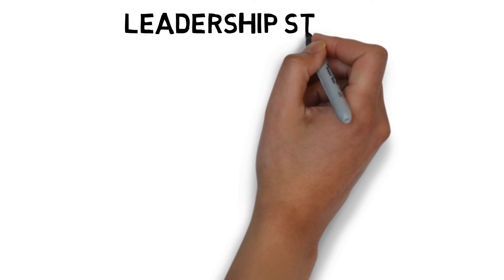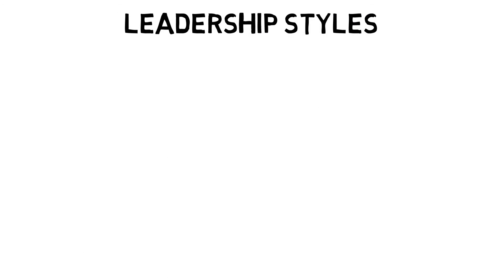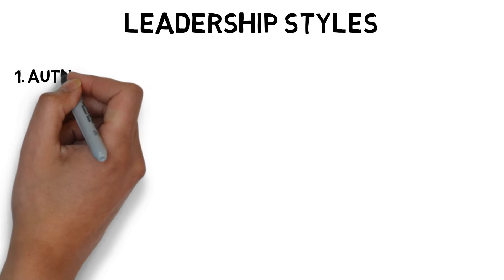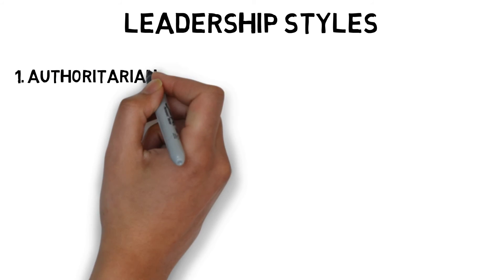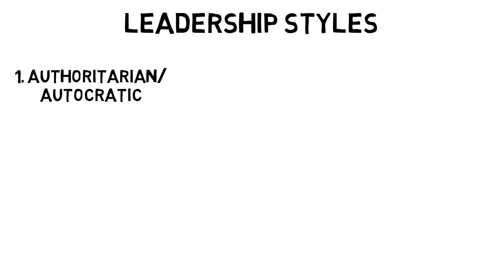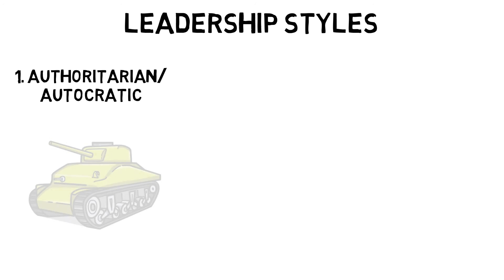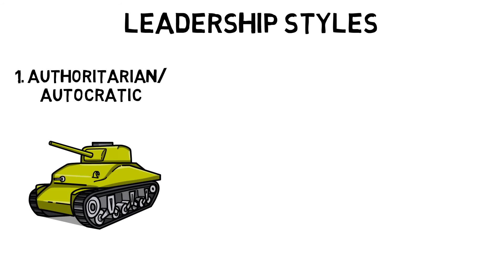There are three main leadership styles. Authoritarian or autocratic leaders dictate to the group and do not ask for advice. When the leader is absent, the group can slow or stop. These types of leaders are most effective when there are many performers and when decisions need to be made quickly towards a clear goal.